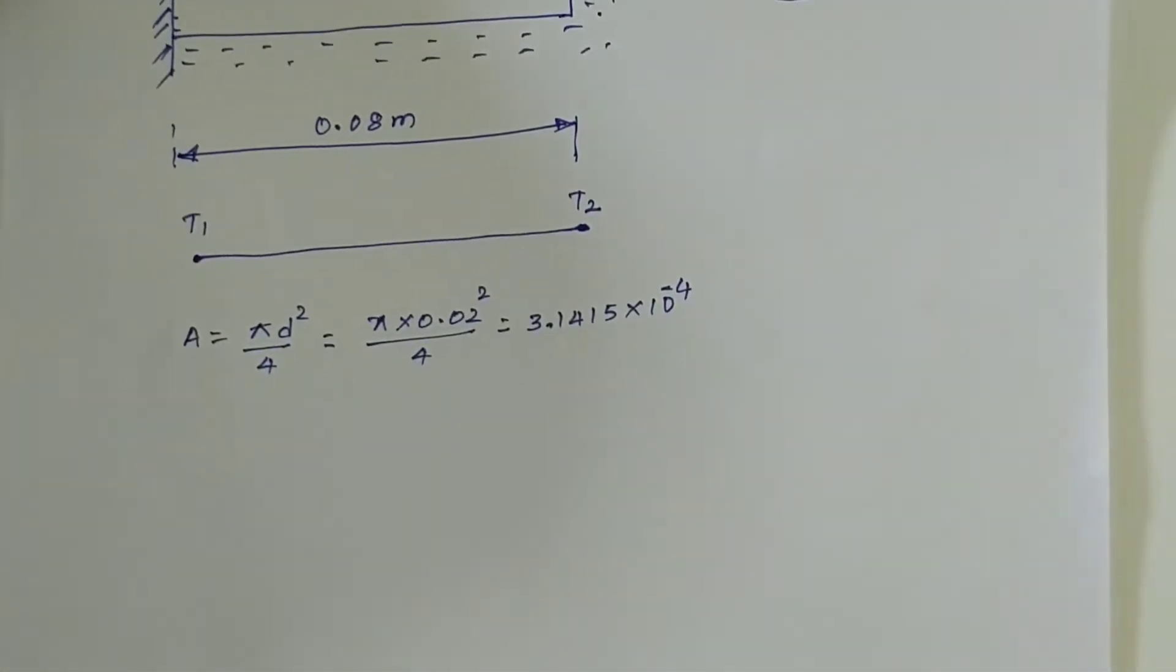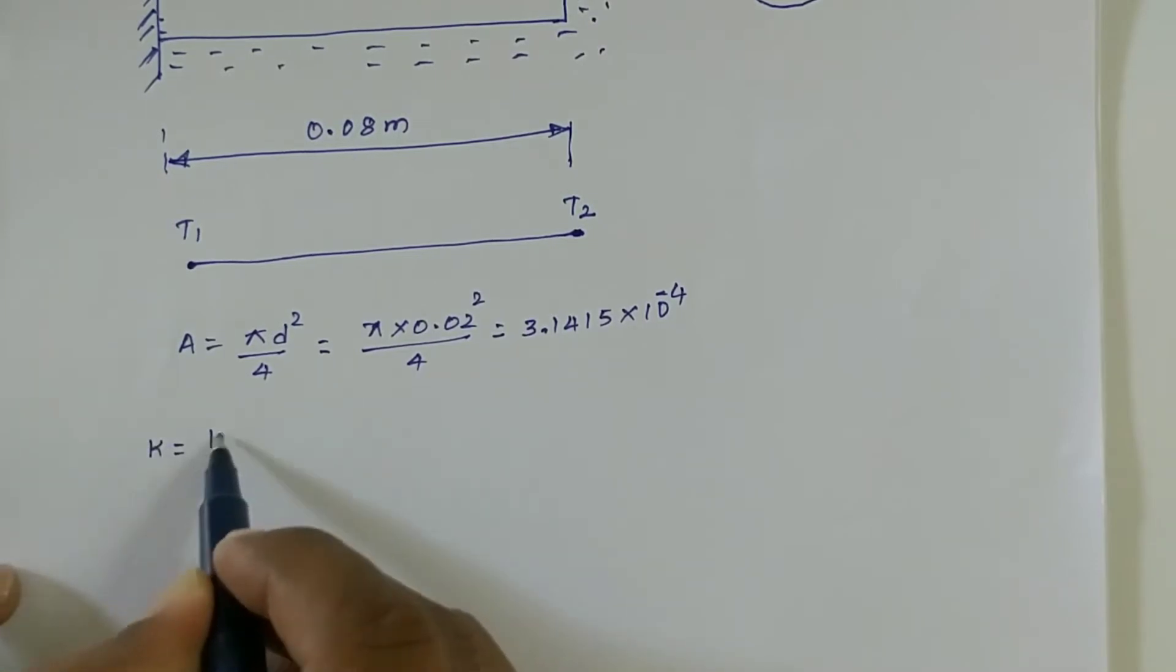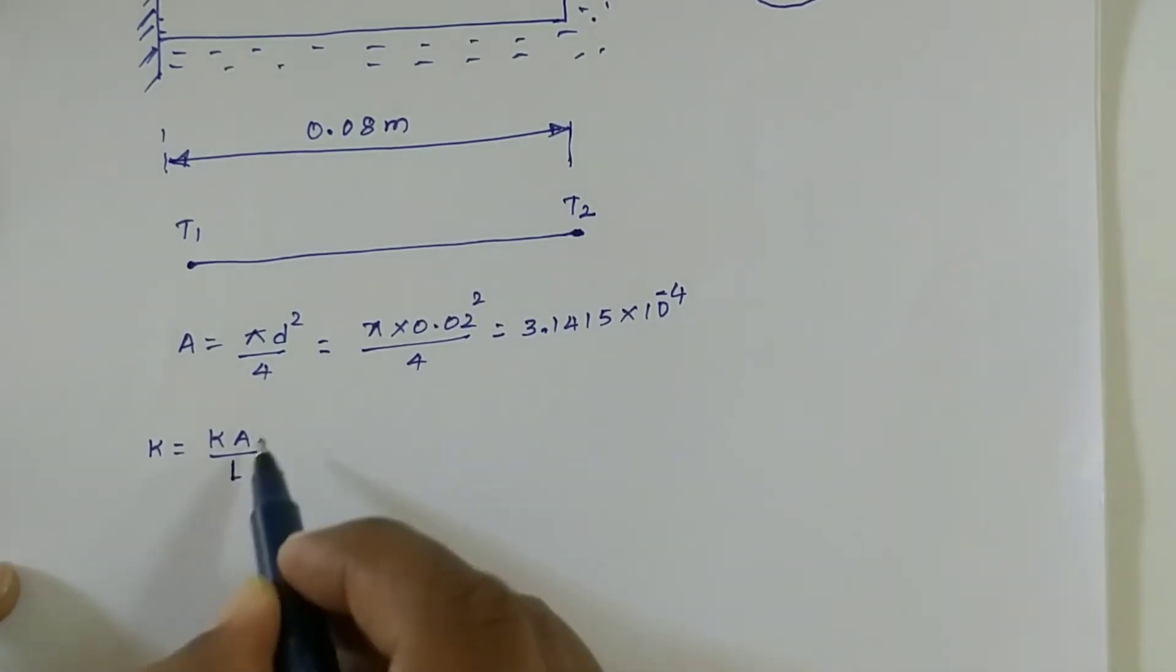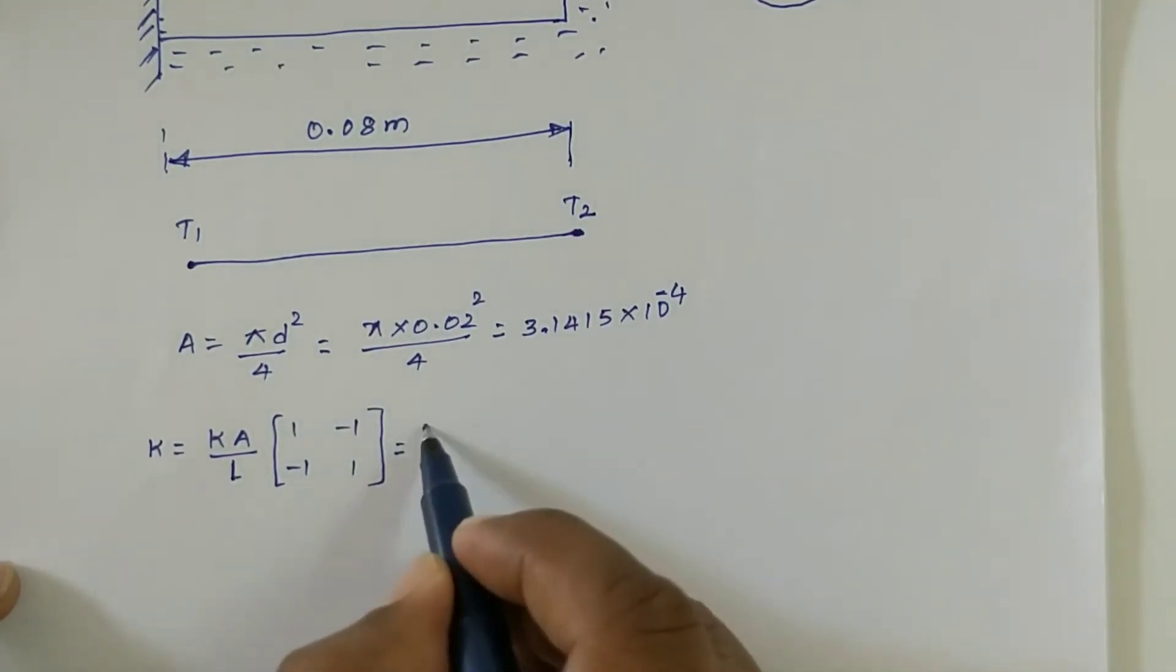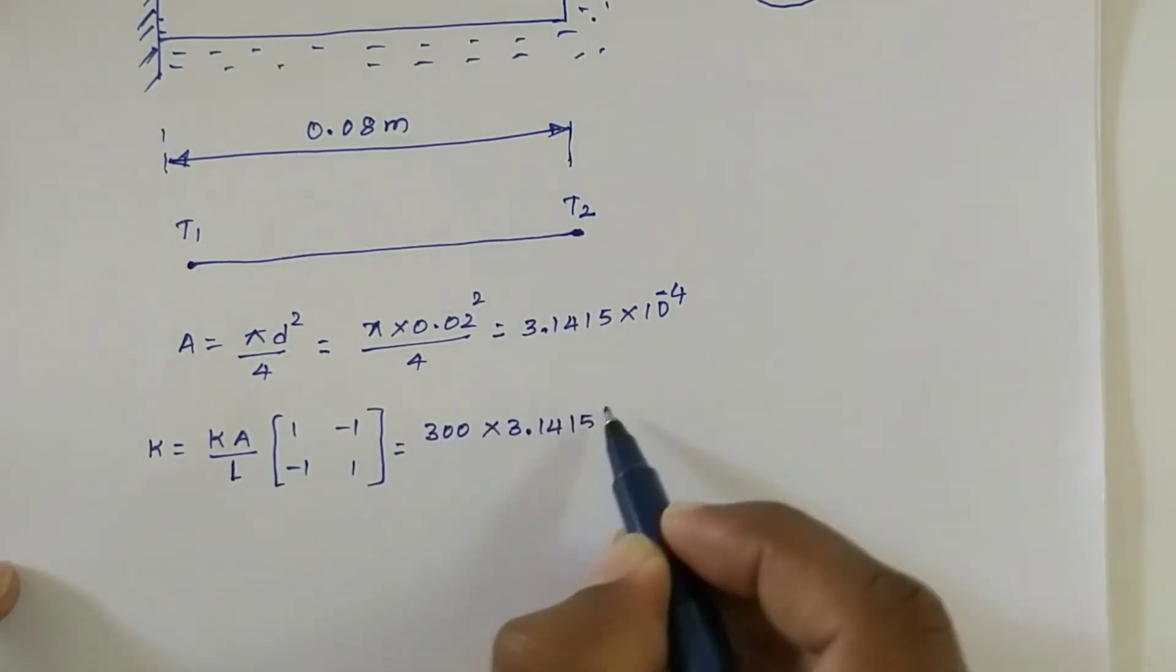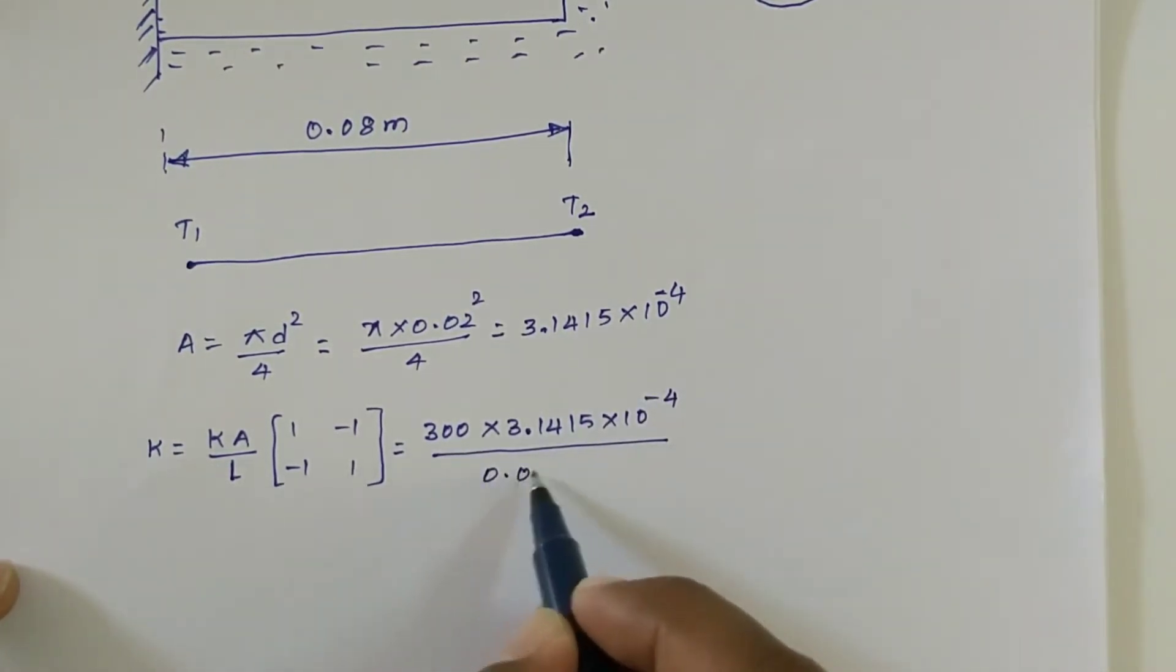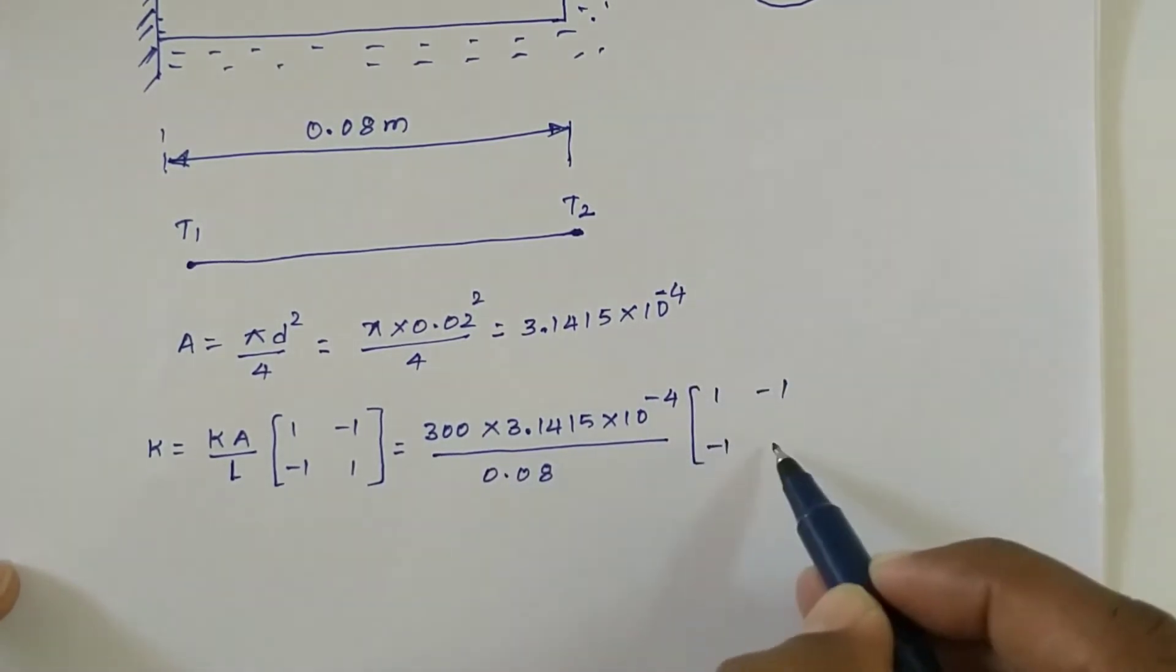Now we have to consider thermal conductivity matrix which is K equals K A divided by L, matrix [1 -1; -1 1]. So K is thermal conductivity 300, Area is 3.1415 times 10 power minus 4, divided by length 0.08, times [1 -1; -1 1].